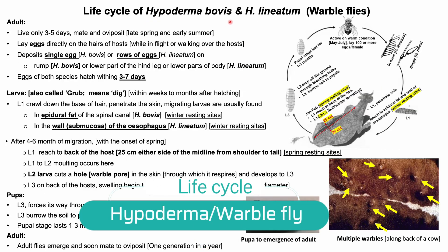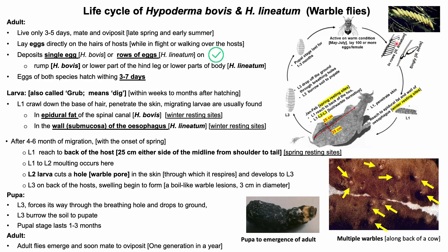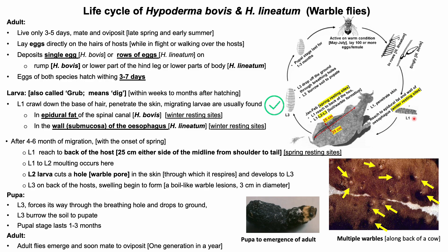Flies are active in warm conditions, particularly between late spring and early summer. Female Hypoderma bovis and Hypoderma lineatum lay eggs while in flight or walking over the host, depositing eggs more commonly on the legs or lower part of the body. Hypoderma bovis lays eggs singly, while Hypoderma lineatum deposits rows of six or more eggs on a single hair. Eggs hatch within three to seven days, and the first instar larvae crawl down the hair, penetrate the skin, and migrate to different parts of the body.